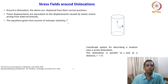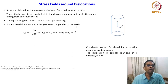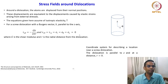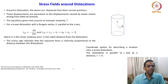The equations given here assume isotropic elasticity. For a screw dislocation with a Burgers vector B parallel to the Z axis, the shear stress in polar coordinates is tau = Gb/2πr, which we have already seen. Since it is tau_Rθ and tau_Rz, sigma_R = sigma_θ = sigma_Z = 0, where g is the shear modulus and r is the radial distance from the dislocation. The minus sign indicates that the repulsive force is inversely proportional to the distance between the dislocations.